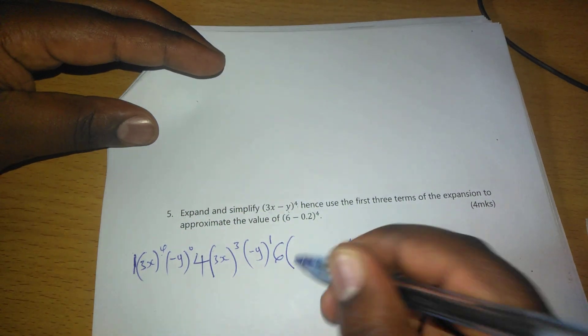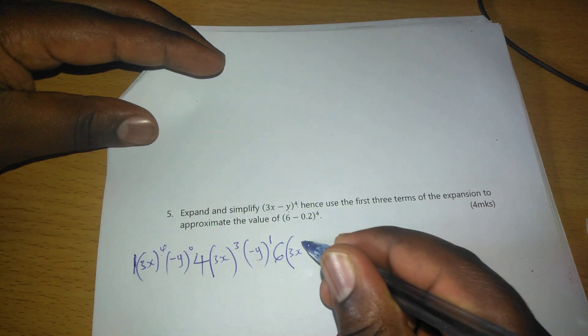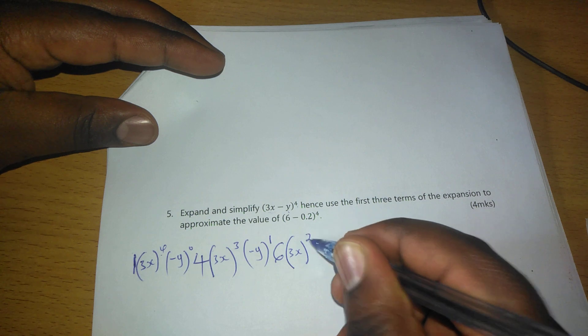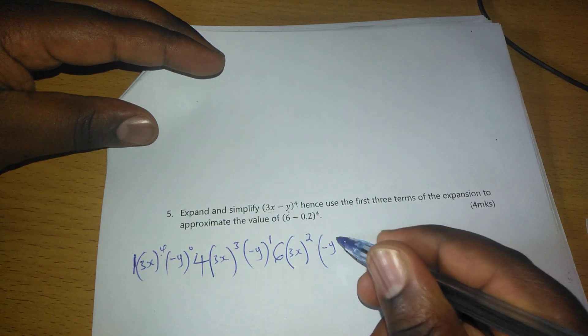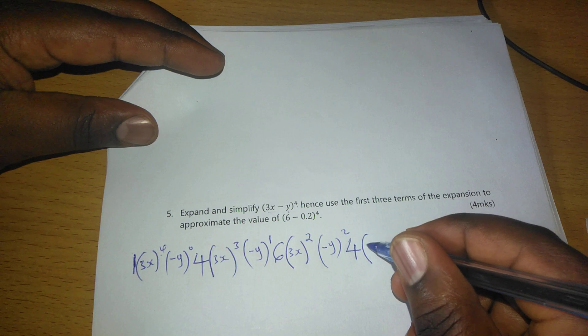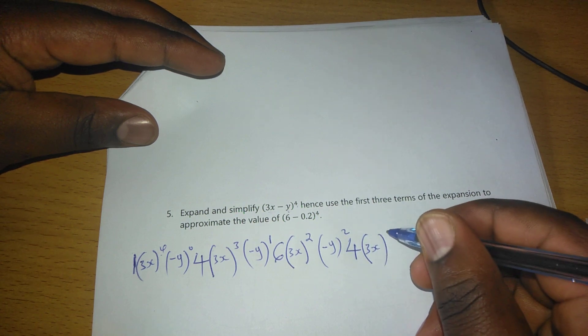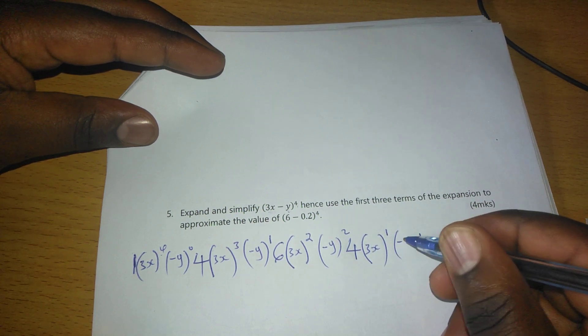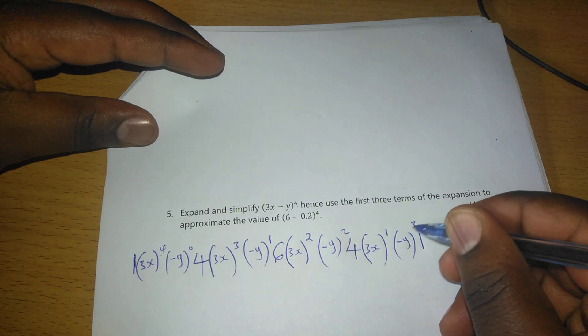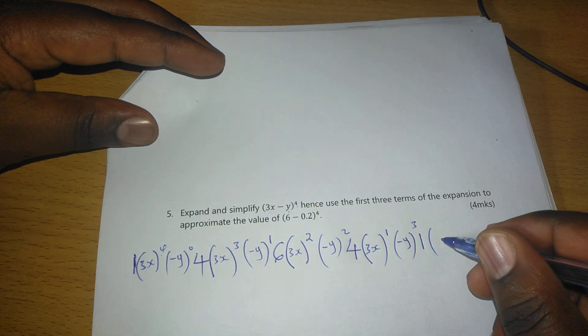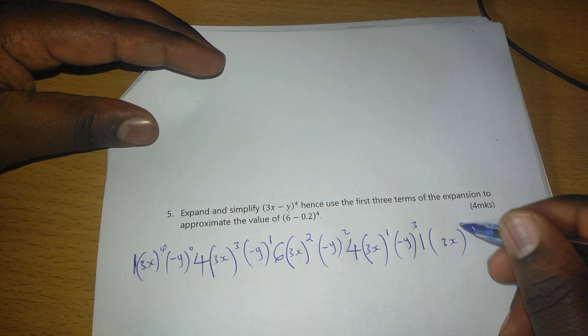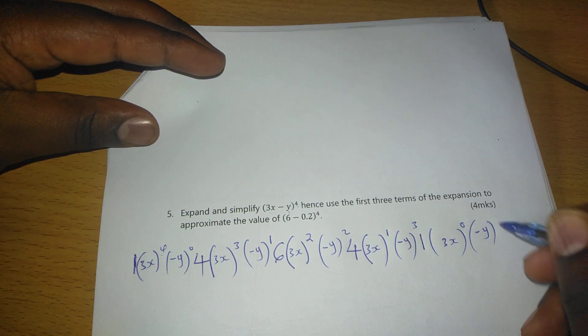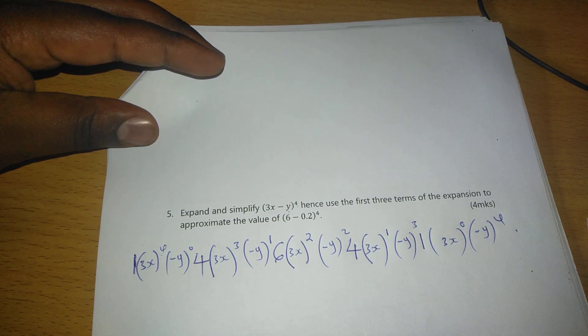Such that in the next one, we will have 3x dropping to power 2, but -y becomes squared. Then we will have 3x power 1 and -y power 3. And finally, 3x to 0 and -y raised to 4.